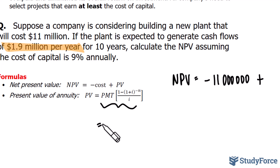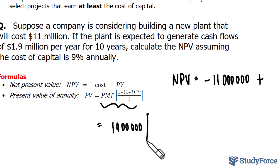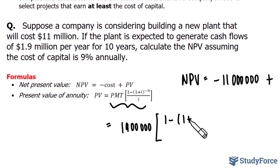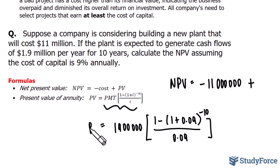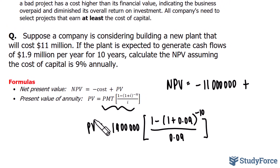Each year we expect to generate $1.9 million, so that will be represented as PMT. And that's being multiplied by one minus one plus the interest rate. Since the cash flow is coming in per year, the interest per period will be 9%, or 0.09 for I. That expression will be raised to negative 10, or 10 periods, and we divide that by 0.09 as well. So whatever we find for PV, we will substitute that into this equation.